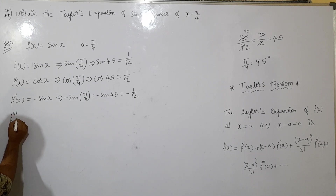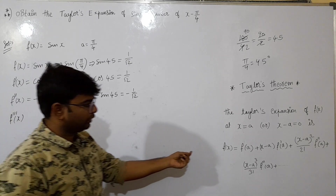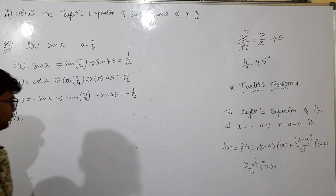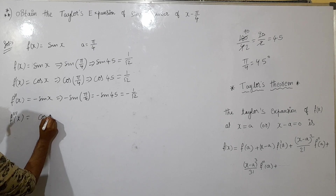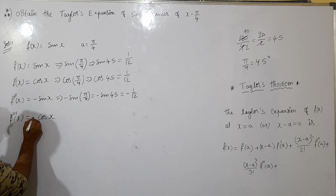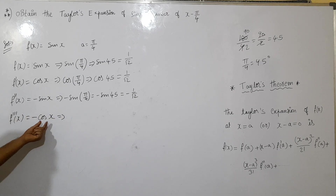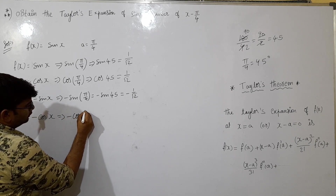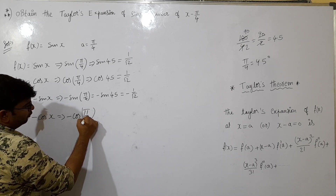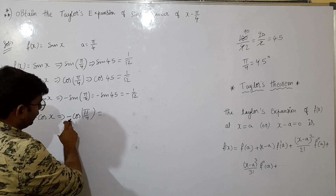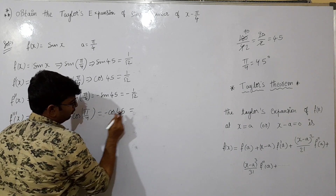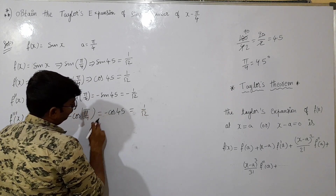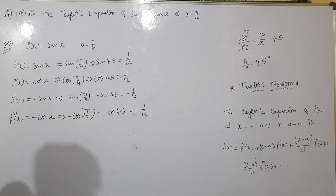Next, triple derivation. The triple derivative — sin is equal to cos x — at x equal to pi by 4. pi by 4 is equal to 45, minus cos 45, minus 1 by root 2. So, I will say f of x, f dash of x, f double dash, f triple dash.